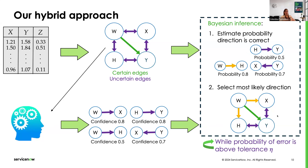We do this iteratively: in each iteration, we re-estimate the probability of being correct and select the one with the highest probability and add it to the graph. We stop whenever our estimated probability of making an error is below a certain tolerance constant eta, which is fixed by the user. This expresses how much the user is willing to take risk — the higher the probability of error we estimate, the more likely there will be errors in the directions we return.